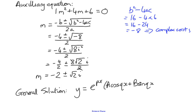It doesn't really matter if the sine and cosine terms are the other way around, but the important thing here is to remember that p is -2 and q is √2, which means that our solution is going to be y = e^(-2x)(A cos √2x + B sin √2x).